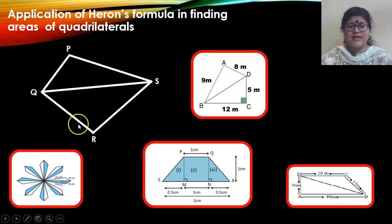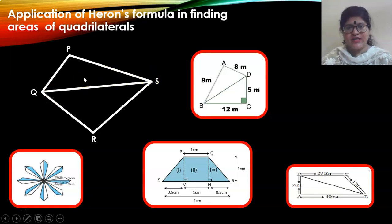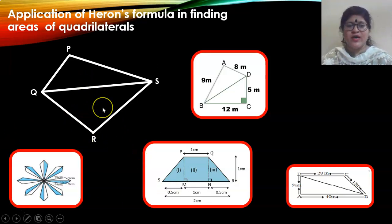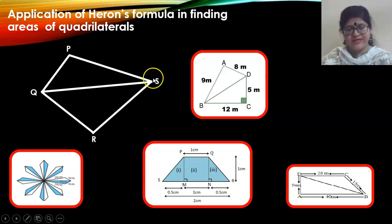In quadrilateral PQRS, if PQ, PS and side QS are known to us, then we can calculate the area of triangle PQS using Heron's formula. Likewise, the area of triangle QRS can also be calculated by Heron's formula. Add up the areas of these two triangles and you will get the area of quadrilateral PQRS.